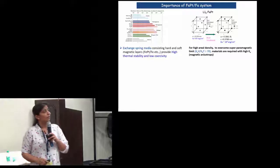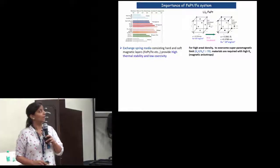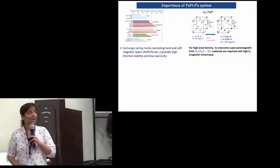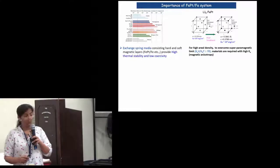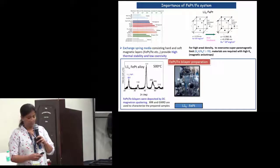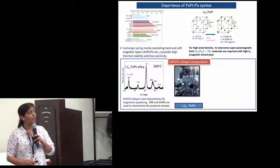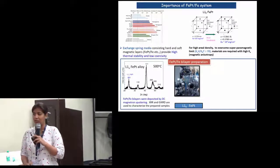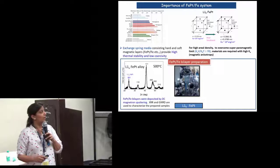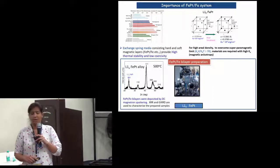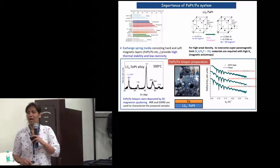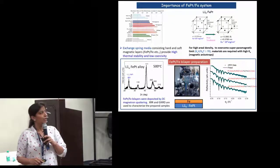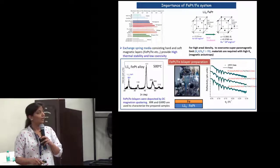The importance of the FePt-Fe bilayer system is that it is used in exchange spring media because it has both a hard and a soft component. We prepared this FePt-Fe bilayer system using DC sputtering technique. First we formed the FePt alloy — this is the XRD of it — and then we deposited an iron layer onto it, varying the thickness of the iron layer, and this is the XRD of it.